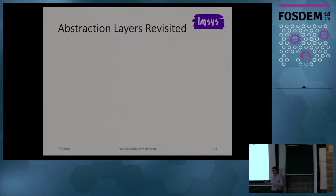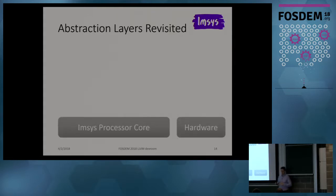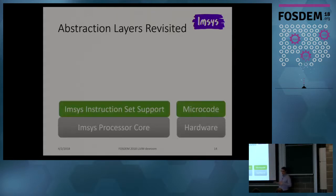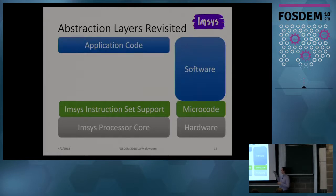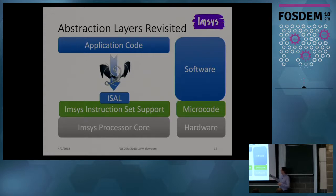Thinking about the abstraction layers again, we can match them to this hardware-microcode-software structure. The processor core itself is hardware. The instruction set architecture is not hardwired in the processor core — it's defined by microcode. Above the microcode we have a thick layer of software: at the high level is the application code, at the lowest level is the instruction set implemented in microcode, and the high level and low level software is connected by LLVM.